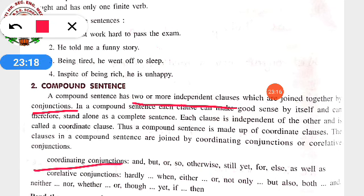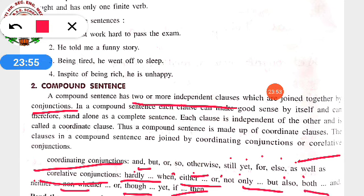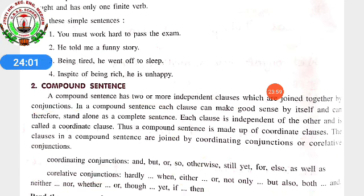Some examples of coordinating conjunctions are: and, but, or, so, otherwise, till, yet, for, else, as well as. Correlative conjunctions come in pairs — for example: hardly/when, either/or, not only/but also, both/and, neither/nor, whether/or, though/yet, if/then. By seeing them in pairs you can understand they are correlative conjunctions, and by seeing them as single words you can understand they are coordinating conjunctions.